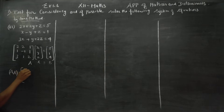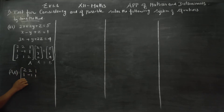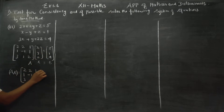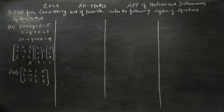A matrix is: 2, 2, 1 / 1, minus 1, 1 / 3, 1, 2, followed by b matrix values 5, 1, 4. This combined form is called the augmented matrix.